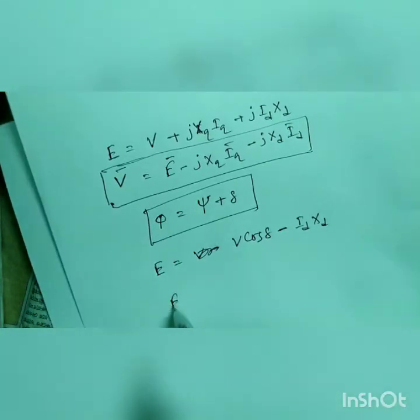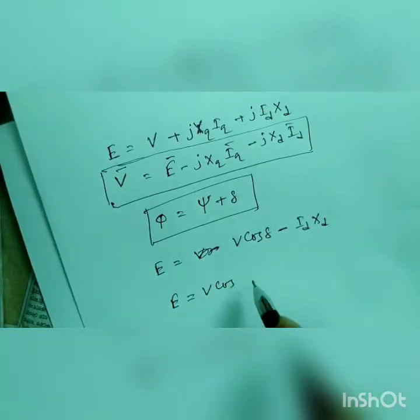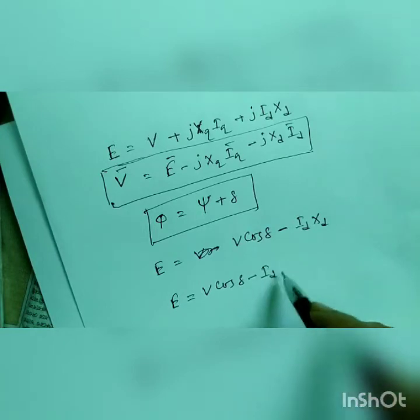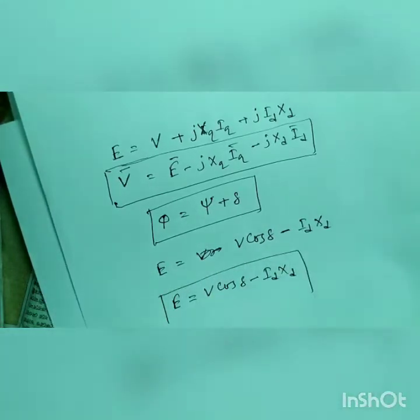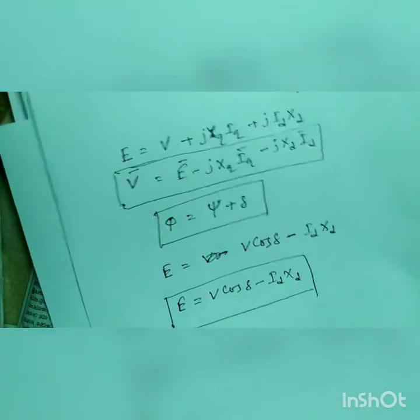So the final answer, E is equal to v cos delta minus idxd.